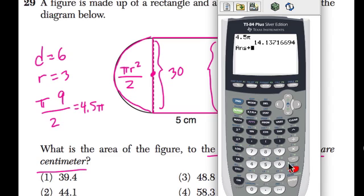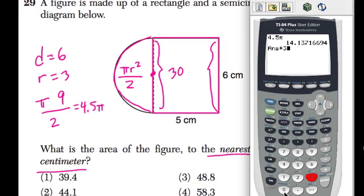Plus, if you just hit plus, it'll use the answer from before: 30, the area of the rectangle.